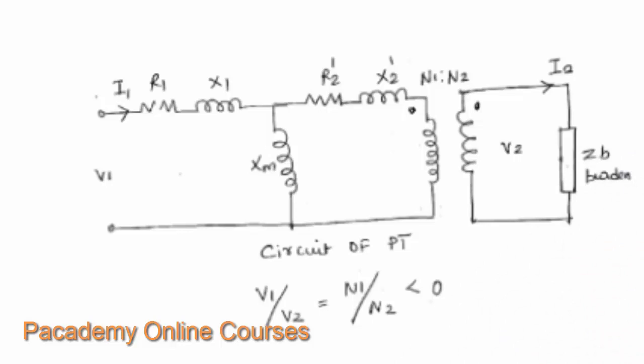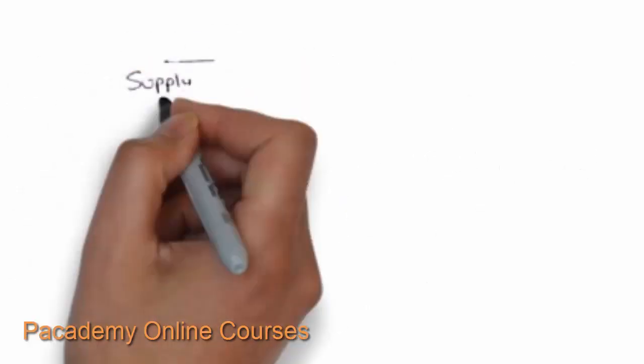For this transformer, V1 by V2 is always greater than 1, N1 by N2 is greater than 1, while N2 by N1 is less than 1. R1 and X1 are the primary winding resistance and reactance, and R2 and X2 are the secondary winding resistance and reactance transferred to the primary side. N1 by N2 is the transformation ratio and XM is the magnetizing current equivalent. The burden is the equipment connected, which is typically the voltmeter.